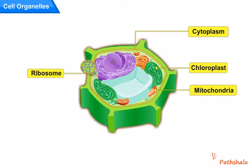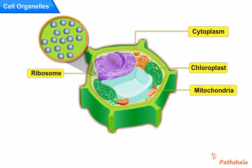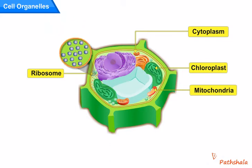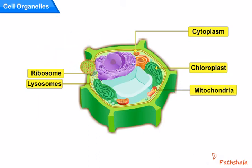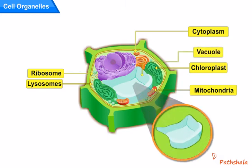Ribosome is the most primitive organelle of the cell and it involves in protein synthesis. Lysosomes are called as the suicidal bag of the cell. Vacuole is called as the storehouse of the cell.